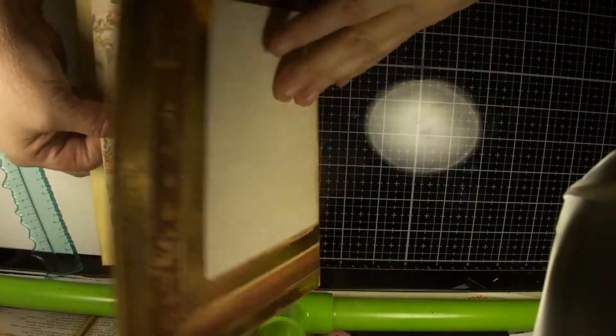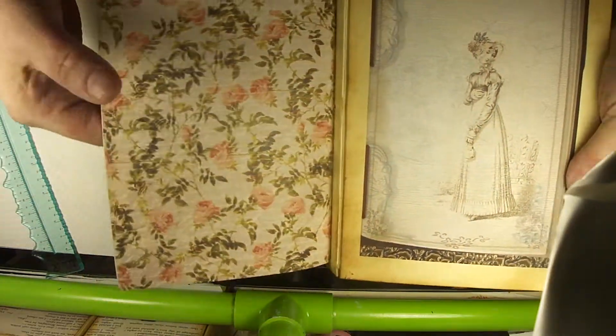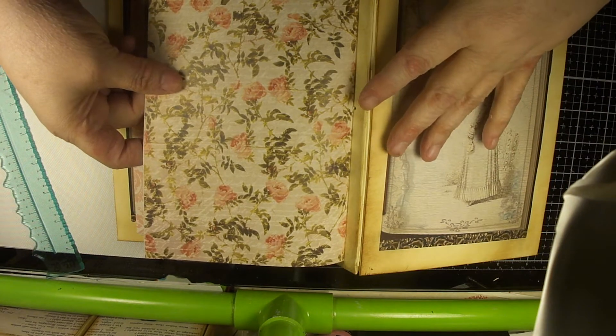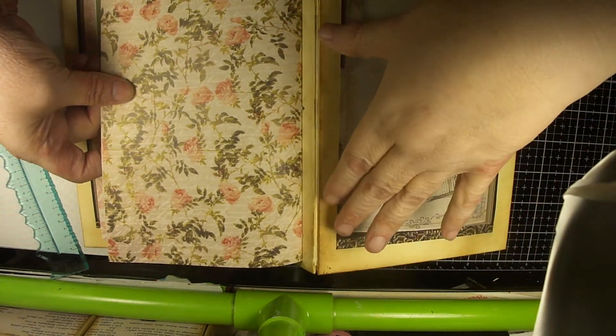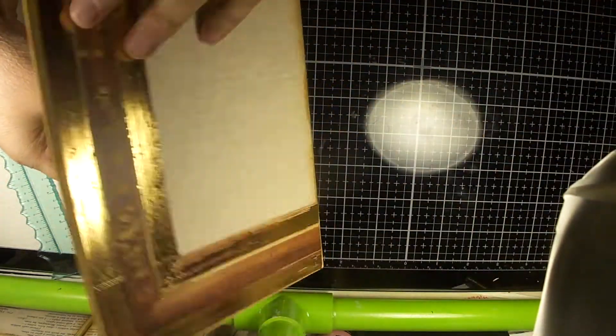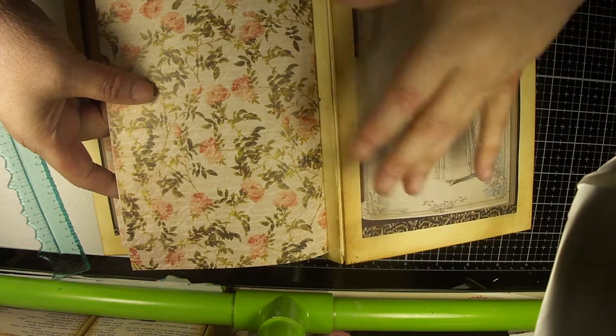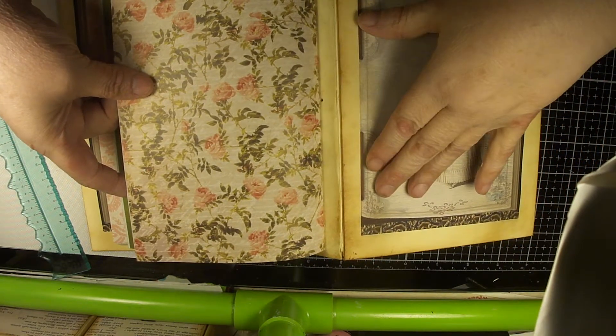In my excitement to do all of this, because it was really coming together so nicely for me, I did a kind of a boner. I had planned to reinforce the front and back covers, where they attach to the spine, with some muslin. And I forgot to do that in my excitement to get going.